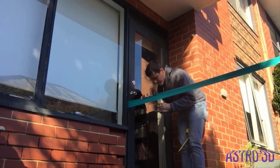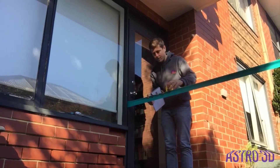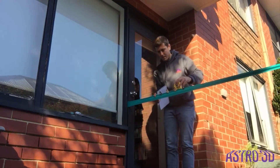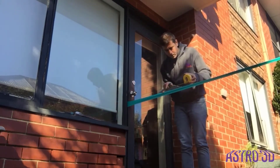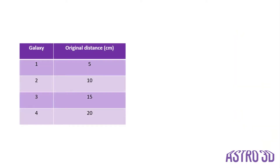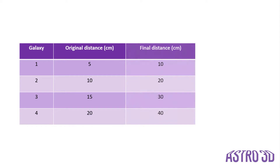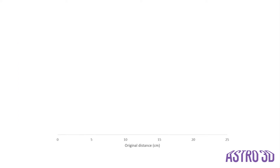Once you've written down all the starting distances, stretch the band until the distance from Earth to the first galaxy is 10 centimeters. Have your friend hold the band still at this point and then re-measure the distance from Earth to all the other galaxies, writing down these values in the second row of your table. For each galaxy, we can determine how far that galaxy has moved relative to the Earth by subtracting the starting distance from the finishing distance after stretching the band. We can then make a graph of the original distance versus the distance moved to visualize our results.